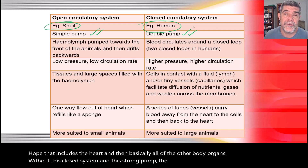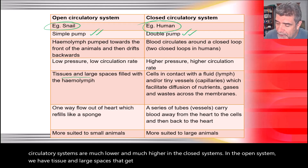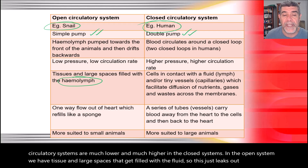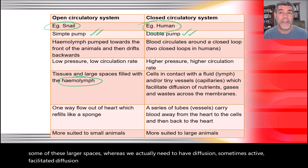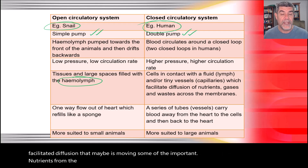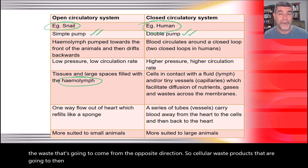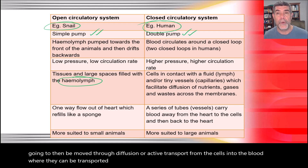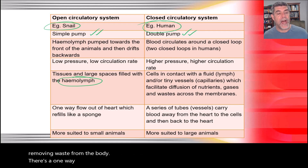Without a closed system and strong pump, pressure and circulation rates in open systems are much lower than in closed systems. In the open system, tissue and large spaces get filled with fluid that leaks out into those spaces. In closed systems, diffusion or facilitated diffusion moves nutrients from the blood into cells, and waste products move from cells into the blood via diffusion or active transport, to be transported to organs for processing.